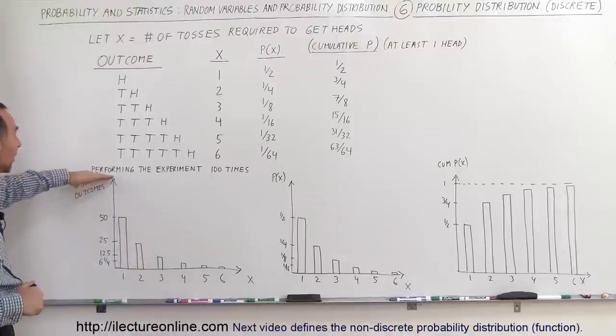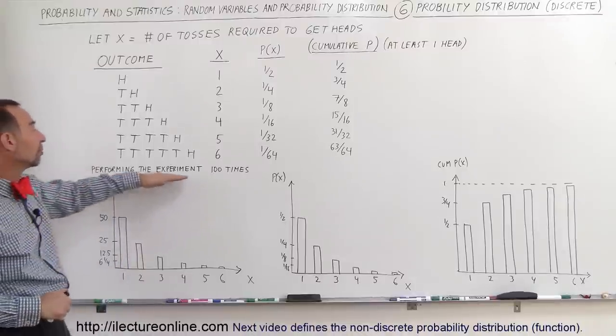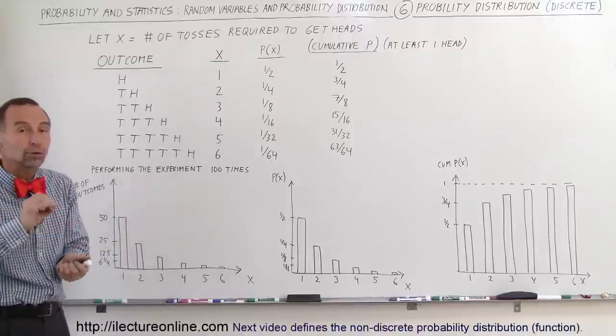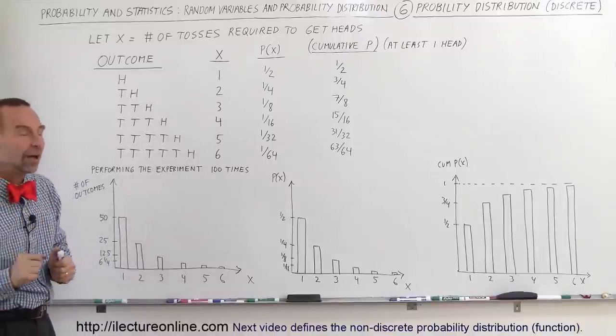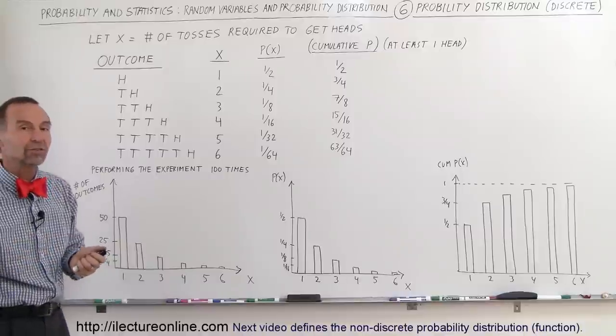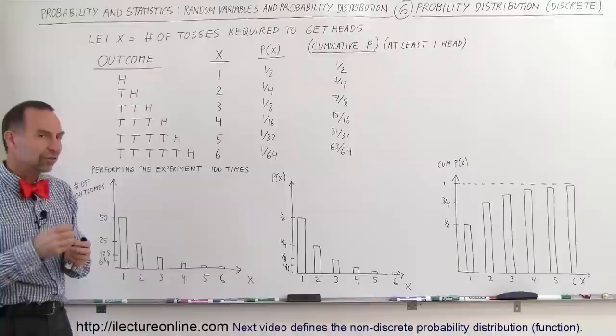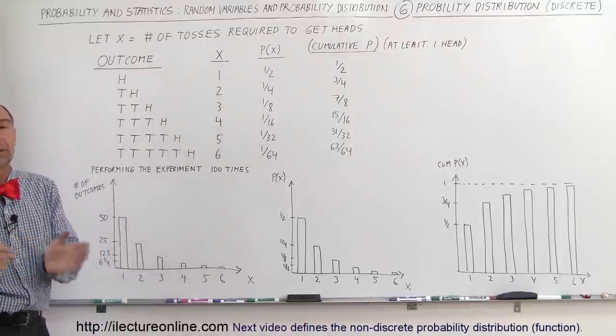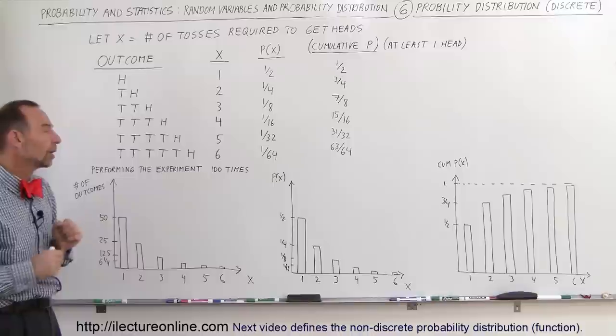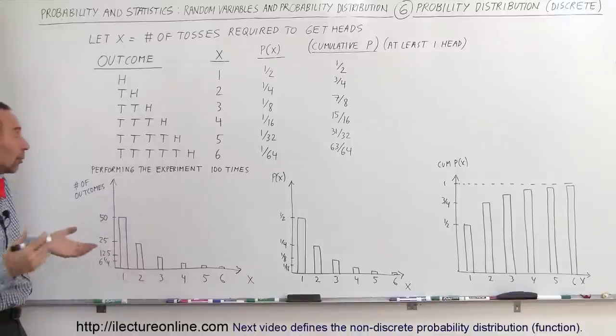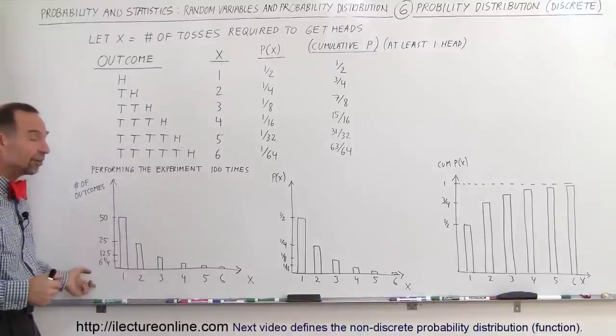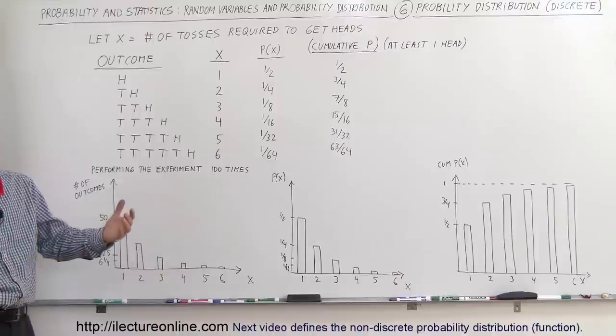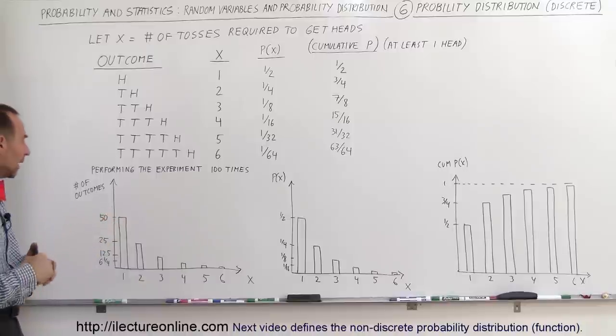Looking at the first graph, let's say that we do the experiment 100 times. It doesn't mean we're going to toss a coin 100 times, we're going to do the experiment 100 times, which means we're going to toss it once, toss it twice, toss it three times until we get heads, and then we'll start over again. That's our first experiment. Now, we do our second experiment. So, let's do it 100 times, and the likelihood when we do that is that 50 out of 100 times you'll get heads on the very first time.